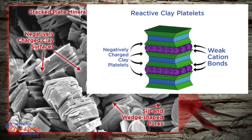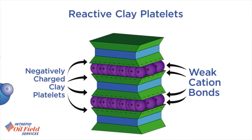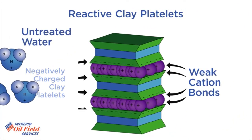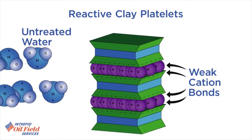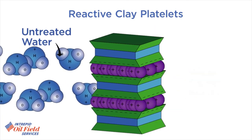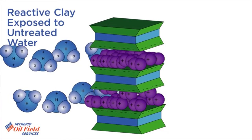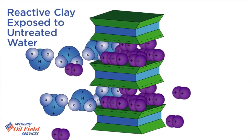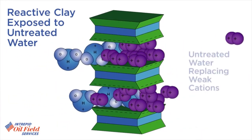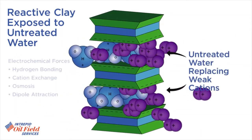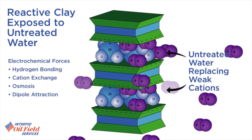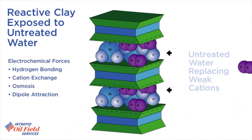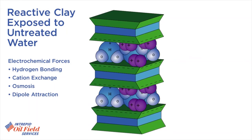The K+ cation bonds to the surface of negatively charged clay platelets, preventing hydration or absorption of water molecules. The smectite platelets are held together by weak cation bonds. When exposed to fresh water, the bonds are broken by water molecules, which are absorbed between the platelets, increasing the distance between them through several electrochemical forces — including hydrogen bonding, cation exchange, osmosis, and dipolar traction — which causes the swelling.